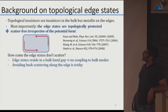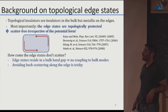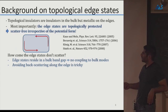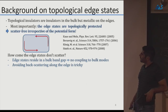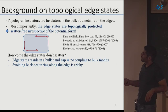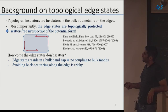A topological insulator is a material that, if you consider the infinite bulk, is an insulator. But once you truncate it, you get conductance on the edge. It was first considered for electronic systems. What you get is unidirectional conductance along the edges, and it has several interesting features. One of them is the unidirectionality; the other is robustness to defects — if a defect is present on the edge, you still don't get backscattering.